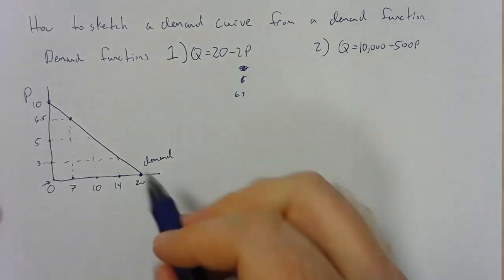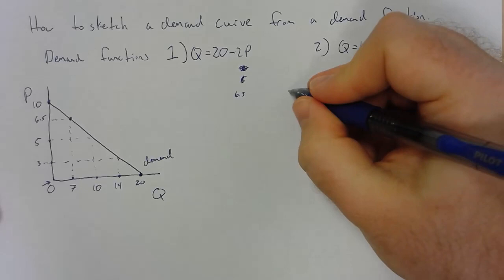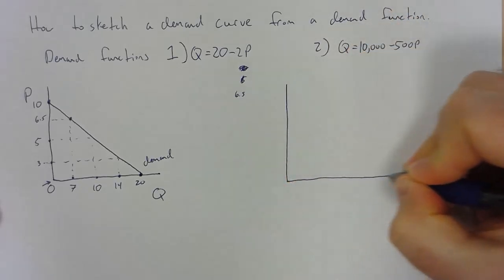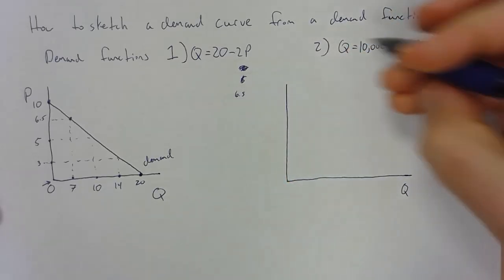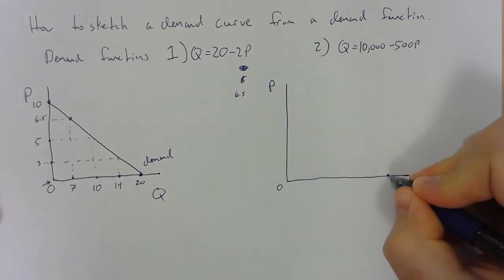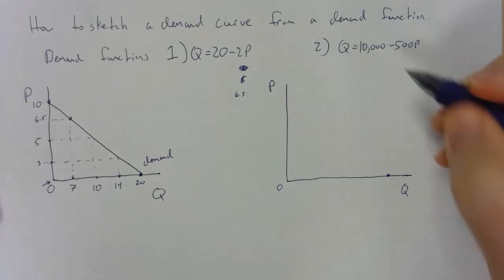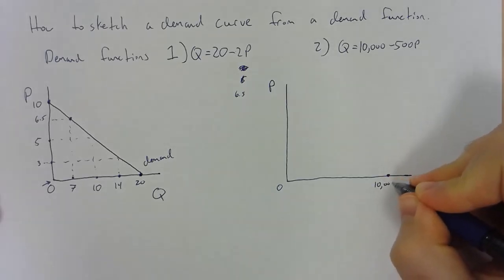So this is how you can sketch a demand curve given a demand function. Let's do it for this second example here. If we start with the intercept on the quantity axis, you can see that if p equals zero, we'll get an intercept of 10,000.